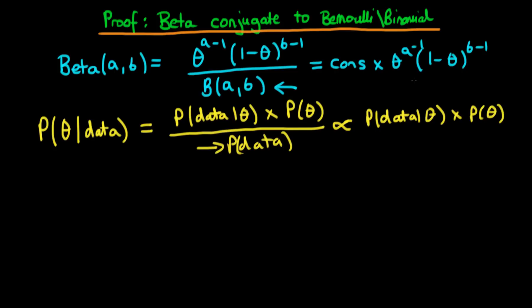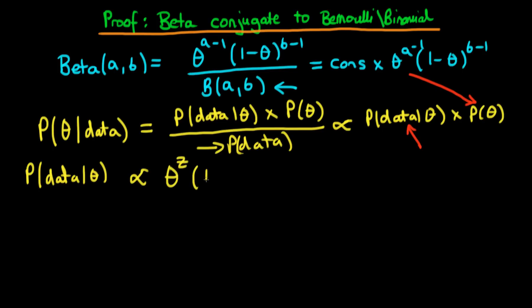Now what we're going to do is put in the beta distribution for our prior, and for the likelihood we're going to insert our binomial and Bernoulli distribution. We know that for a Bernoulli and a binomial distribution the probability of the data given choice of theta is proportional to theta to the power z times one minus theta to the power n minus z, where z is the sum of our individual trials or individual flips of a coin from i equals one to n.